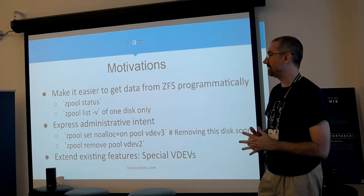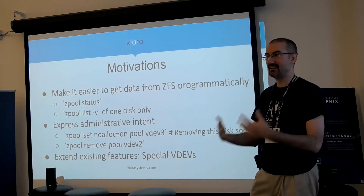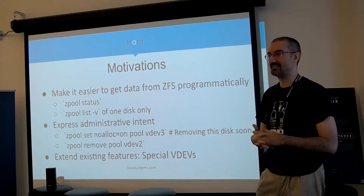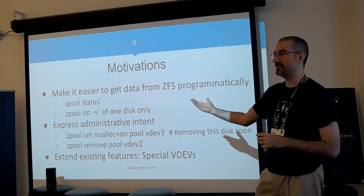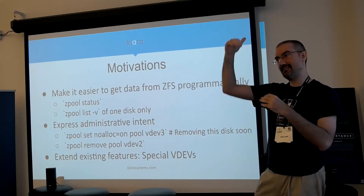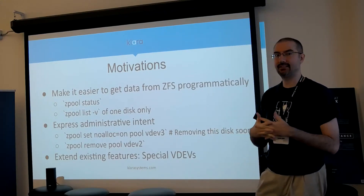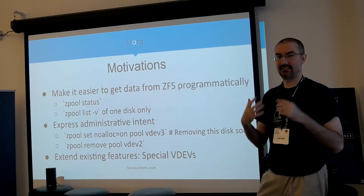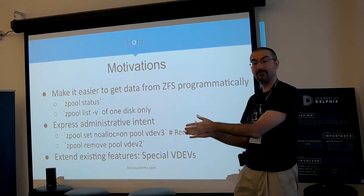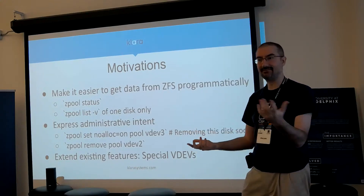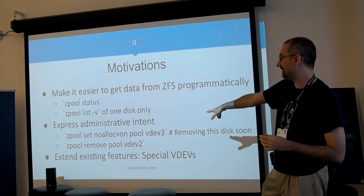My motivation was being able to do things like getting checksum and read and write error counts from zpool status, but without an easy way to extract that information for monitoring or graphs. zpool status is meant for humans, not machines. You can get a list of individual disks by running zpool list -v, but the columns are meant for pools, not disks, so a lot of columns are blank. I also wanted ways to express administrative intent — with device removal, if you're going to do two removals you can only do one at a time, and you probably want to say this other device I'm going to remove, but I'm not removing it yet.